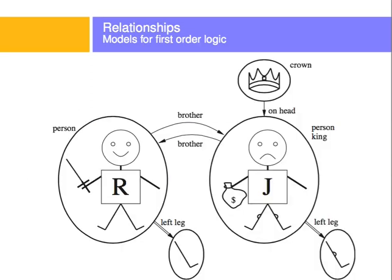Let's look at objects and relations. We have Richard, who is a person. John is also a person, but he's also a king. So 'John is a king' — these are facts. Richard and John are people. Richard is the brother of John, therefore John is the brother of Richard. This object here is a crown, and this crown is on the head of John. This object here is the left leg of Richard, and this object is the left leg of John. This is how we dissect the world into facts, relations, and objects.